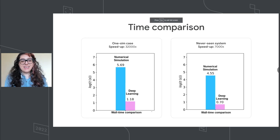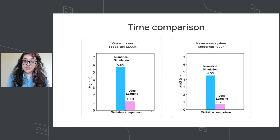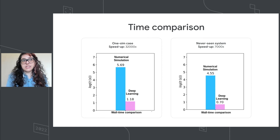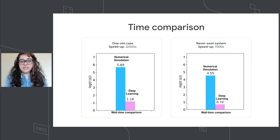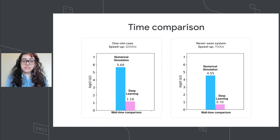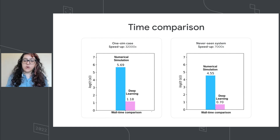Here is the time comparison. For the one-simulation case, deep learning achieves a speedup of 32,000 times faster than a traditional numerical simulation. For example, what takes three days in a numerical simulation takes only about 15 seconds with deep learning. For the never-seen system, the speedup is 7,000 times faster than a numerical simulation. The time comparison is absurd — AI can help us to accelerate black hole physics.